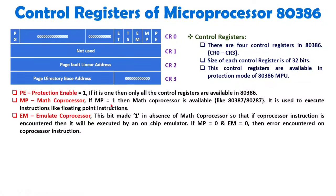If MP equals 0, we will use the EM bit. If MP is 0 and a coprocessor instruction arrives, the on-chip emulator can execute it by setting EM equal to 1. However, if both MP equals 0 and EM equals 0, an error will be encountered on coprocessor instructions. This is because with EM equal to 0, the chip emulator cannot execute coprocessor instructions, and with MP equal to 0, no math coprocessor is available — so 80386 cannot execute floating point instructions.